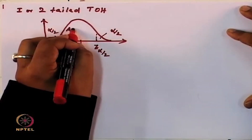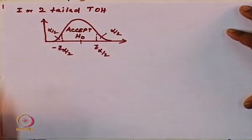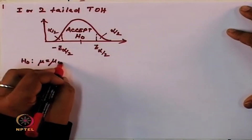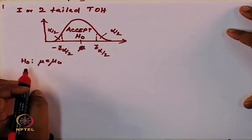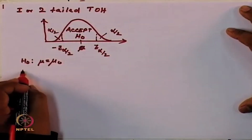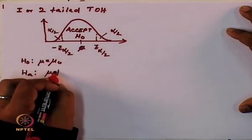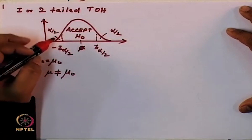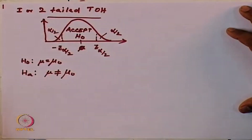This is the acceptance region for H0, whatever is your null hypothesis. Let us say your H0 is mu equal to mu0, then this value becomes 0 after you normalize for a standard normal value. And your alternative hypothesis H1 is mu not equal to mu0.